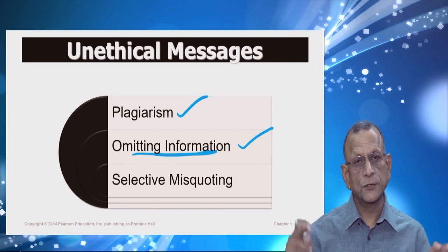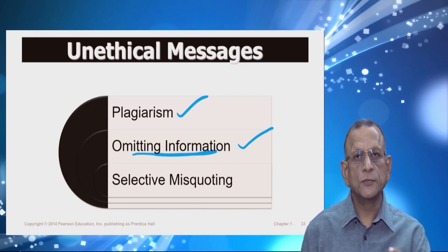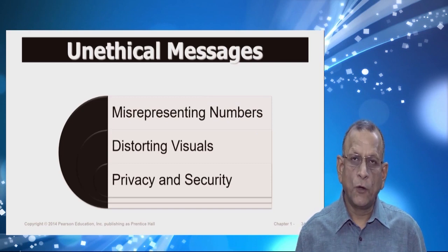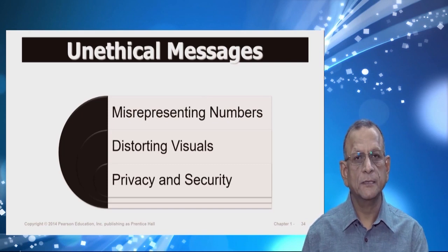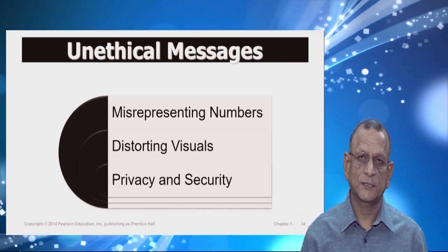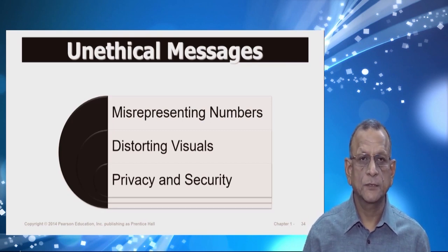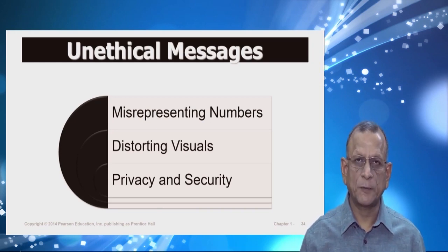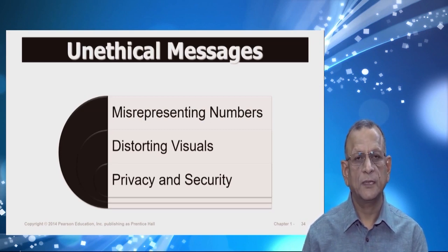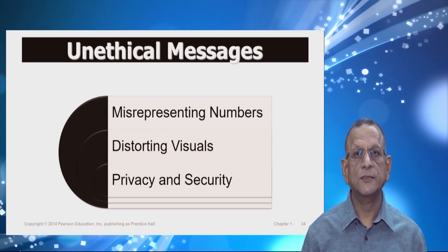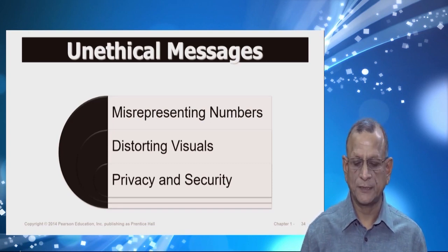Thirdly, selective misquoting — not sharing the entire piece of information but quoting a part of it which is going to mislead the other person; this is also unethical. Fourth is misrepresenting numbers — if you are quoting certain numbers that are not giving a true picture, then this is unethical. Distorting visuals — changing or altering photographs — is also unethical. And finally, violating the privacy and security of an organization or individual is also treated as unethical.